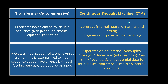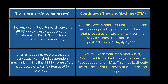Based on my current knowledge, here is how a classical transformer in autoregressive mode compares to a Continuous Thought Machine. A transformer predicts the next token given previous tokens — sequential generation where time is tied to input sequence position, and recurrence is through feeding generated output back as input. The CTM, by contrast, leverages internal neural dynamics and an artificial time for general-purpose problem solving. Time is an internal construct; it can operate on static or sequential data across multiple internal steps.